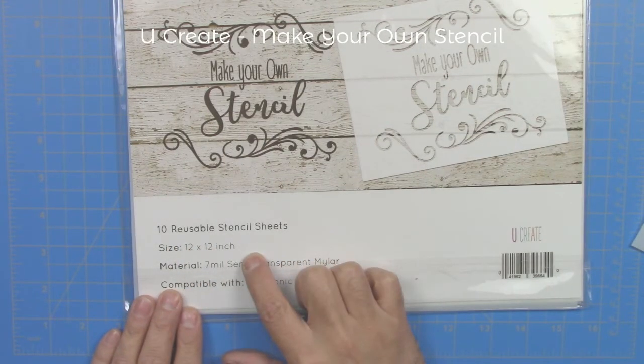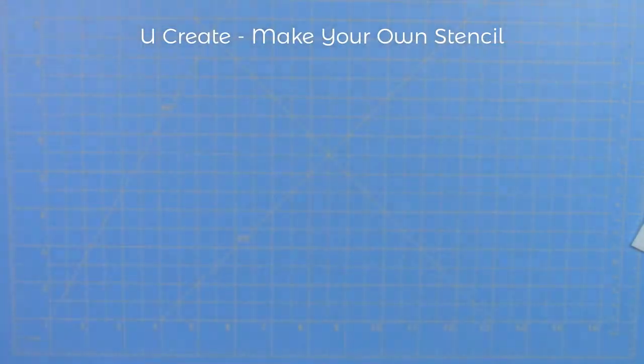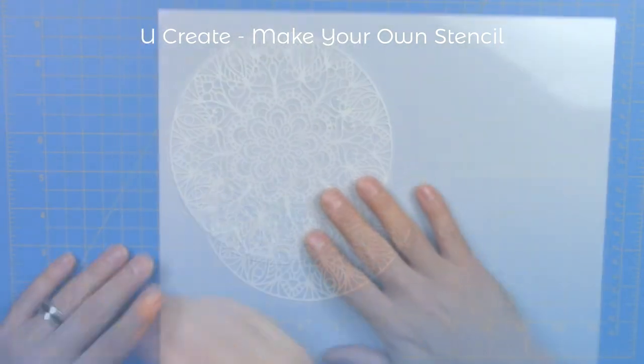Finally, my favorite brand, the make your own stencils from U-Create. These come in packs of 10 twelve by twelve inch sheets. And I love the fact that the big size allows you to make bigger stencils.